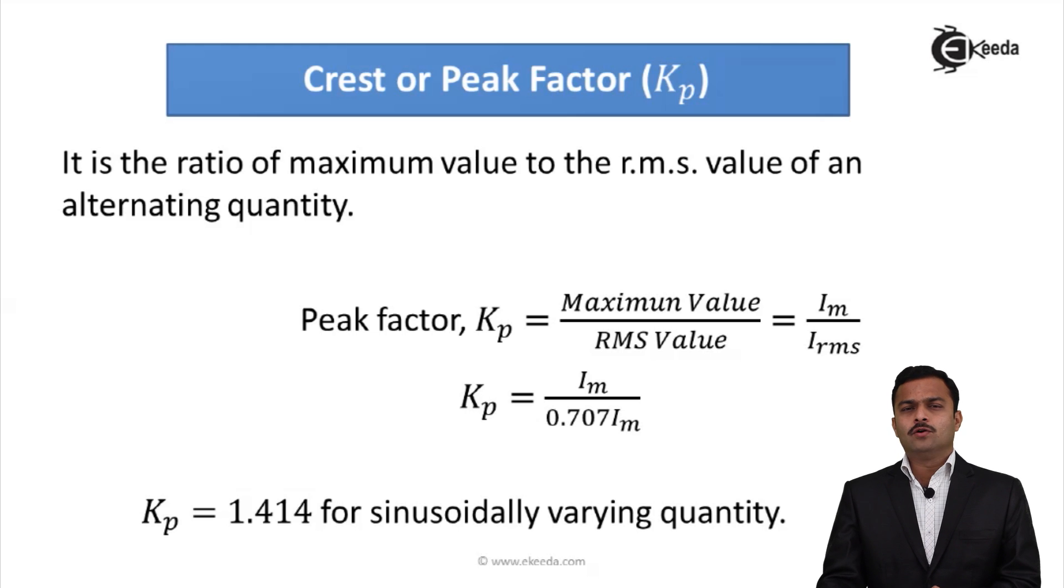We know I_RMS is 0.707Im. Im can be cancelled out, so ultimately we get Kp = 1/0.707. If I solve, it is actually √2, and √2 is 1.414.